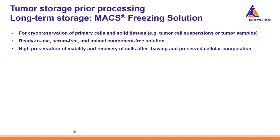When it's not possible to process the samples within a few days, the solution is to cryopreserve the tumor samples. We have actually recently released the MACS Cryo solution, which is suited for the cryopreservation of primary cells and solid tissues, for instance tumor cell suspensions or tumor samples. This solution is ready to use, is serum-free and animal-component-free, and it allows a high preservation of viability and good recovery of the cells after thawing.